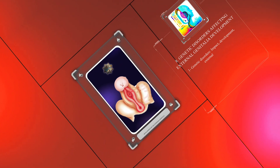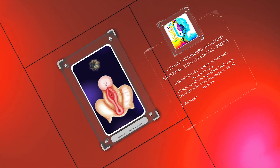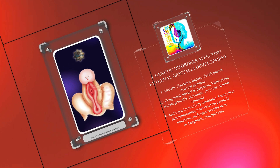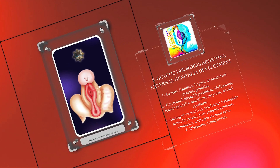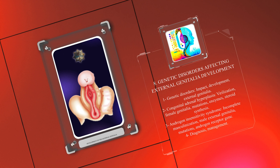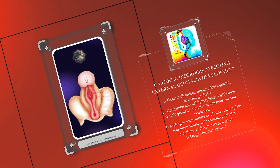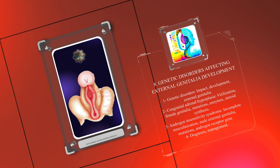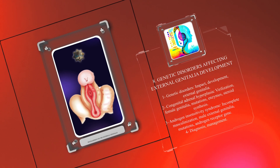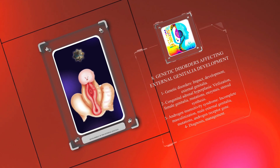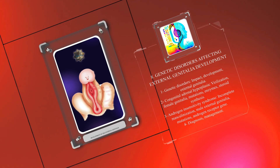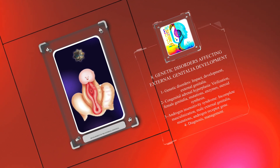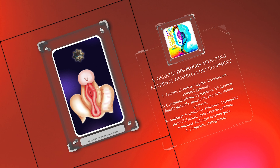Genetic disorders can dramatically impact the development of external genitalia. For instance, congenital adrenal hyperplasia, caused by mutations in enzymes involved in steroid synthesis, can induce virilization of the female genitalia. On the other hand, androgen insensitivity syndrome, resulting from mutations in the androgen receptor gene, leads to incomplete masculinization of the male external genitalia. Understanding these genetic disorders is crucial for diagnosis and management.